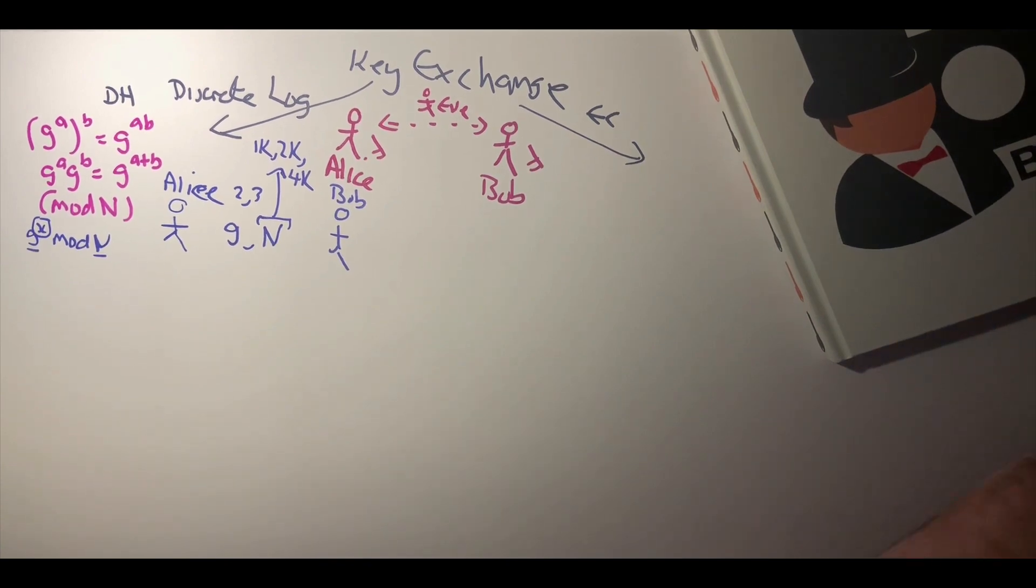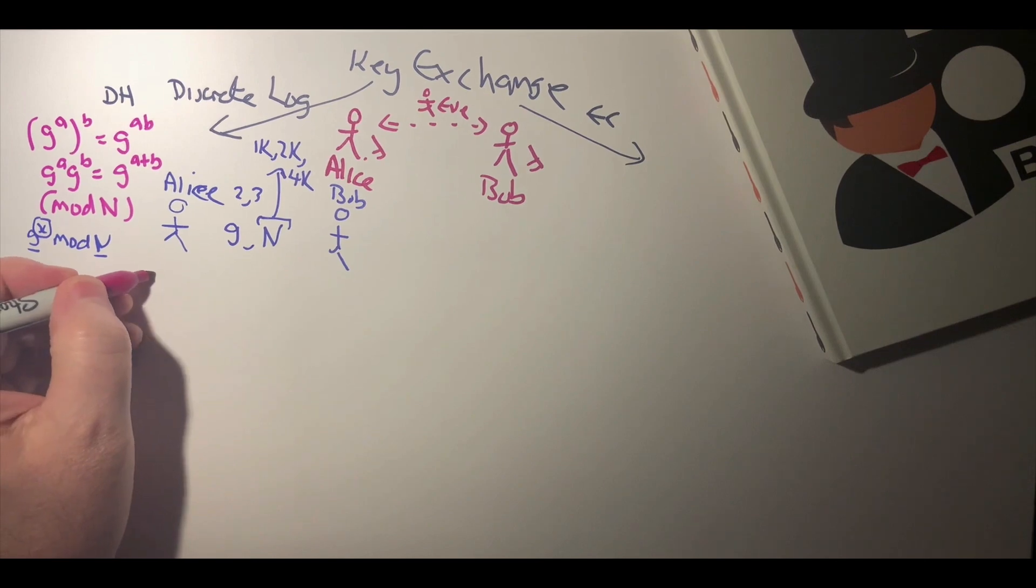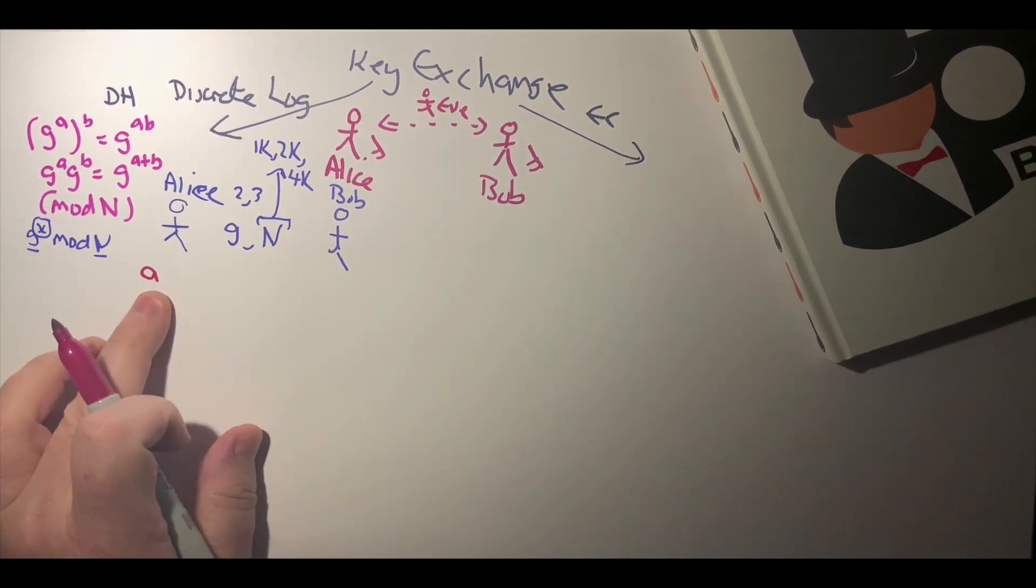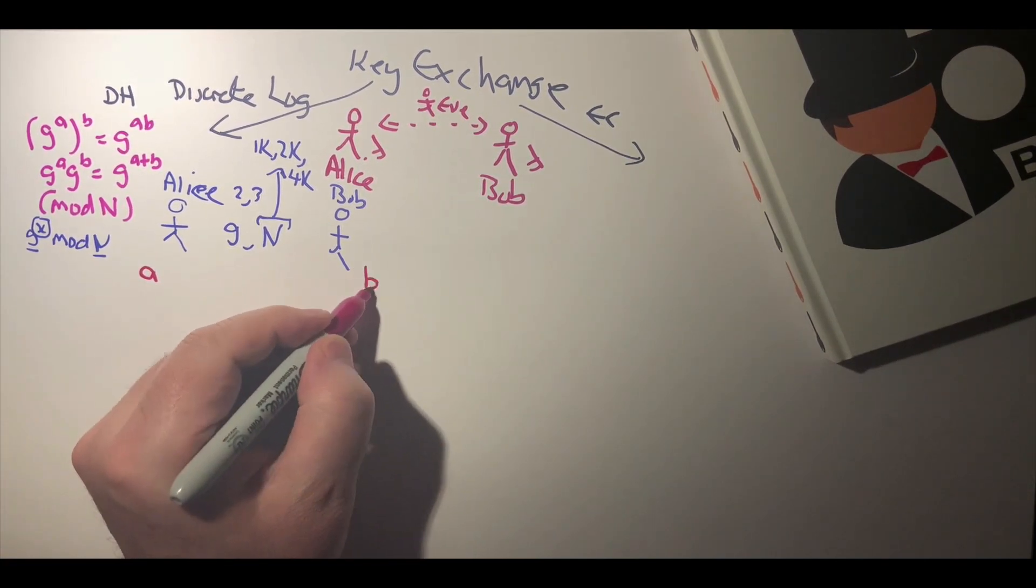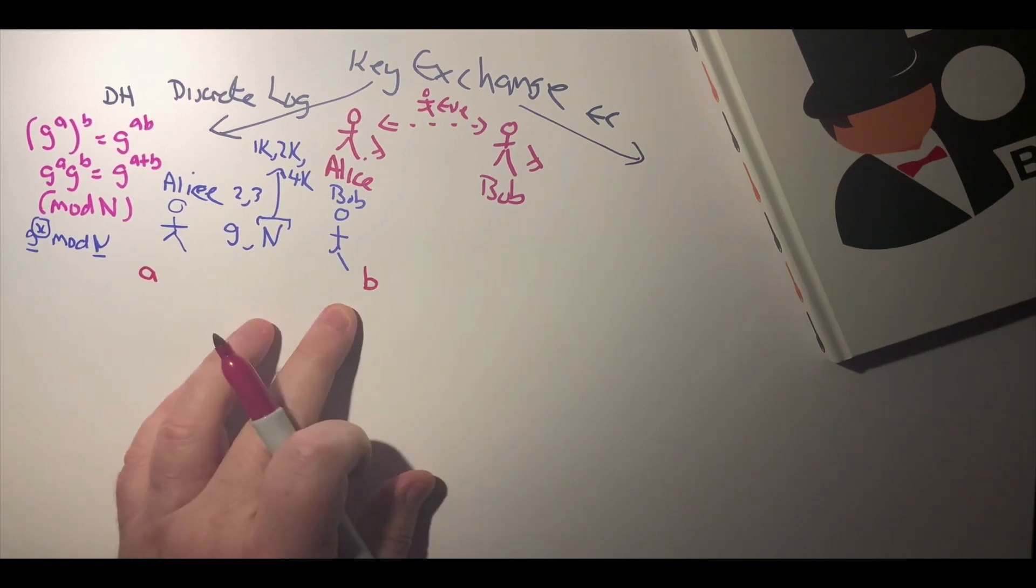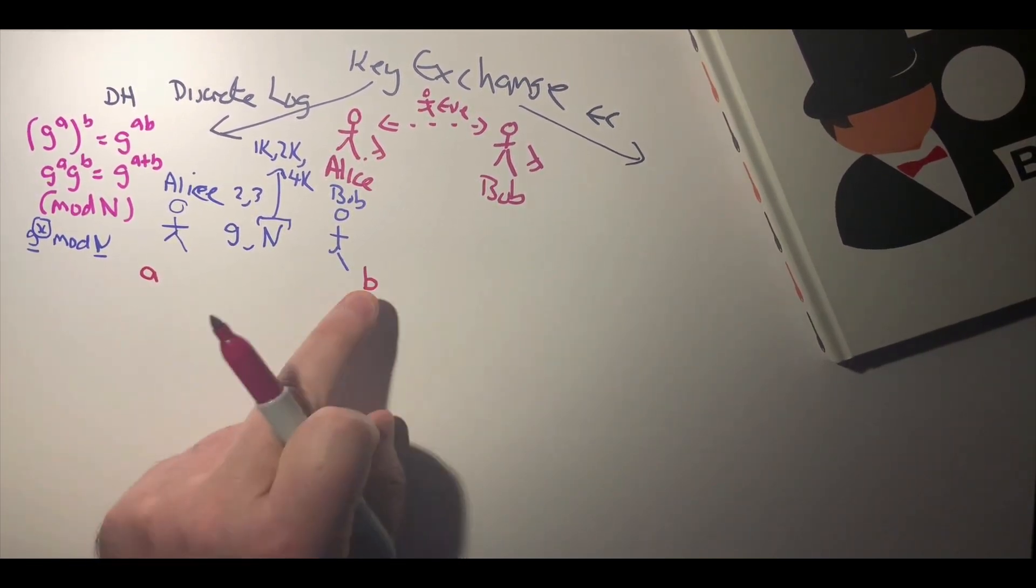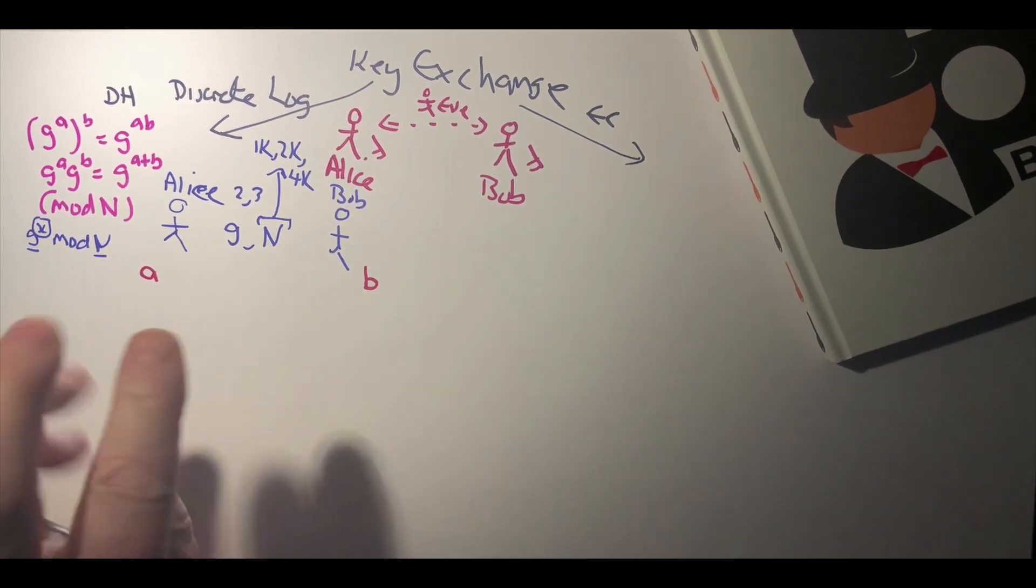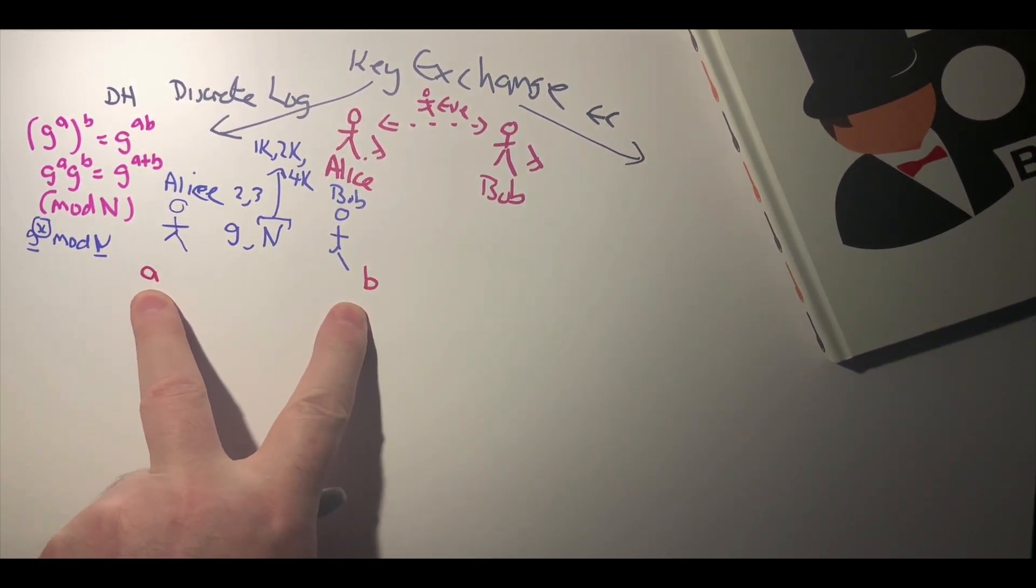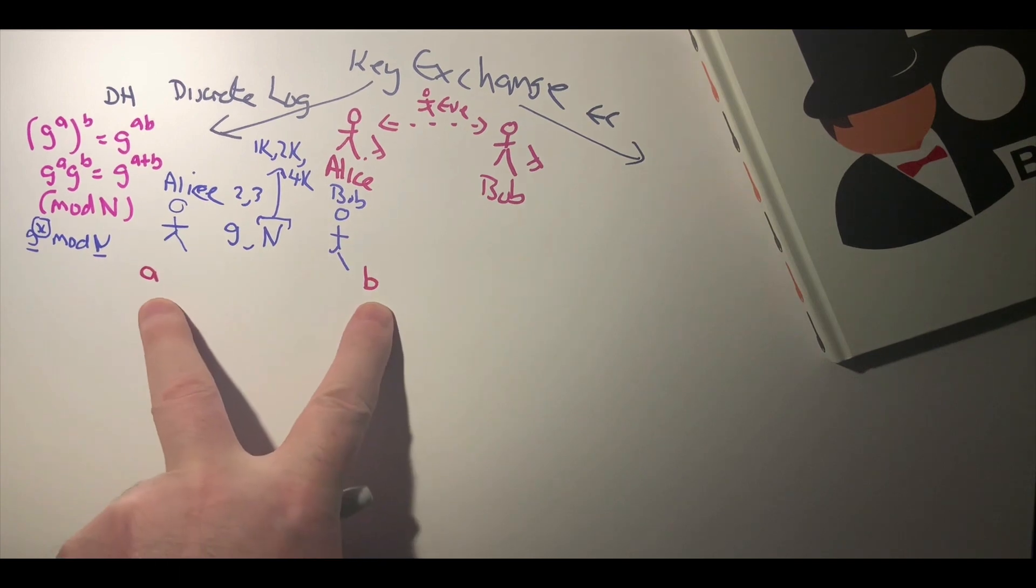So initially, Alice will generate a random value and Bob will create a random value b. This is the secret value that is initially generated when they want to communicate with each other.